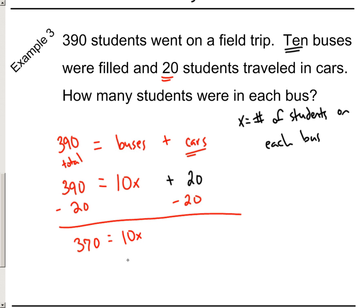So, once we divide both sides by ten, we'd find out that there are thirty-seven students on each bus. There are different ways you could set this up. You could say three ninety minus the number of kids on the bus equals twenty. You could say three ninety minus the twenty would equal the number of kids on the bus. But, you know, this is probably the easiest set up right here.